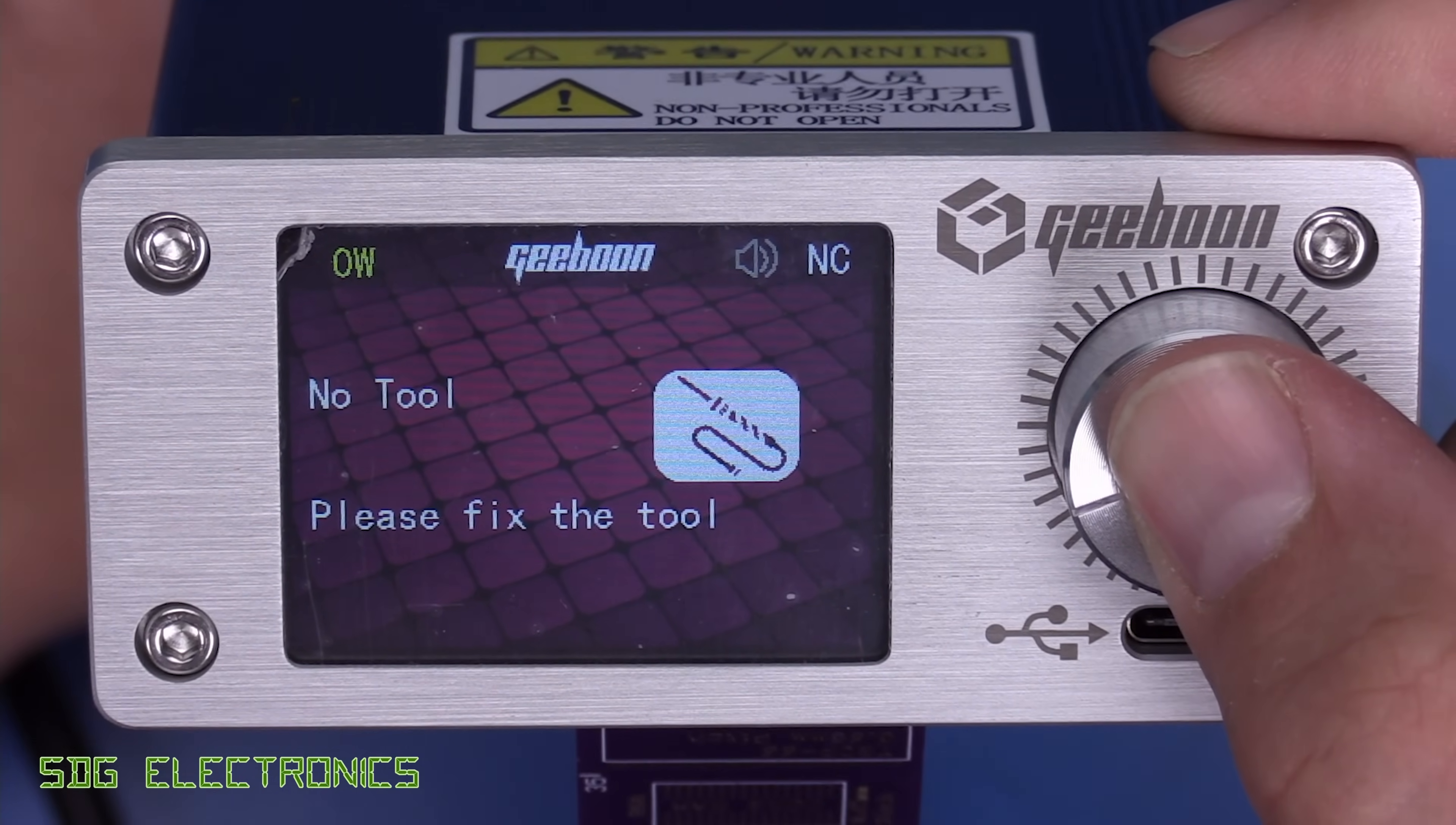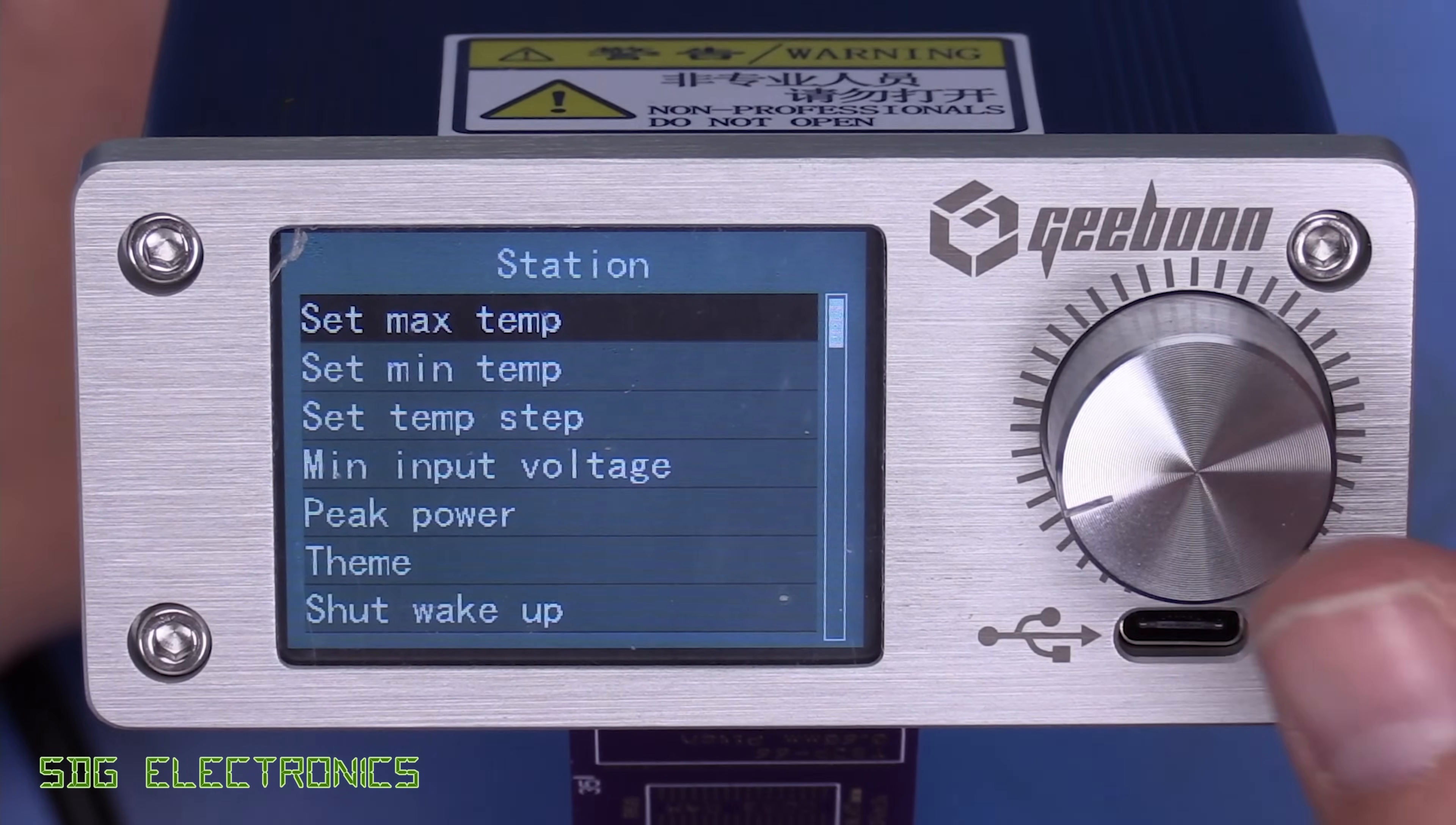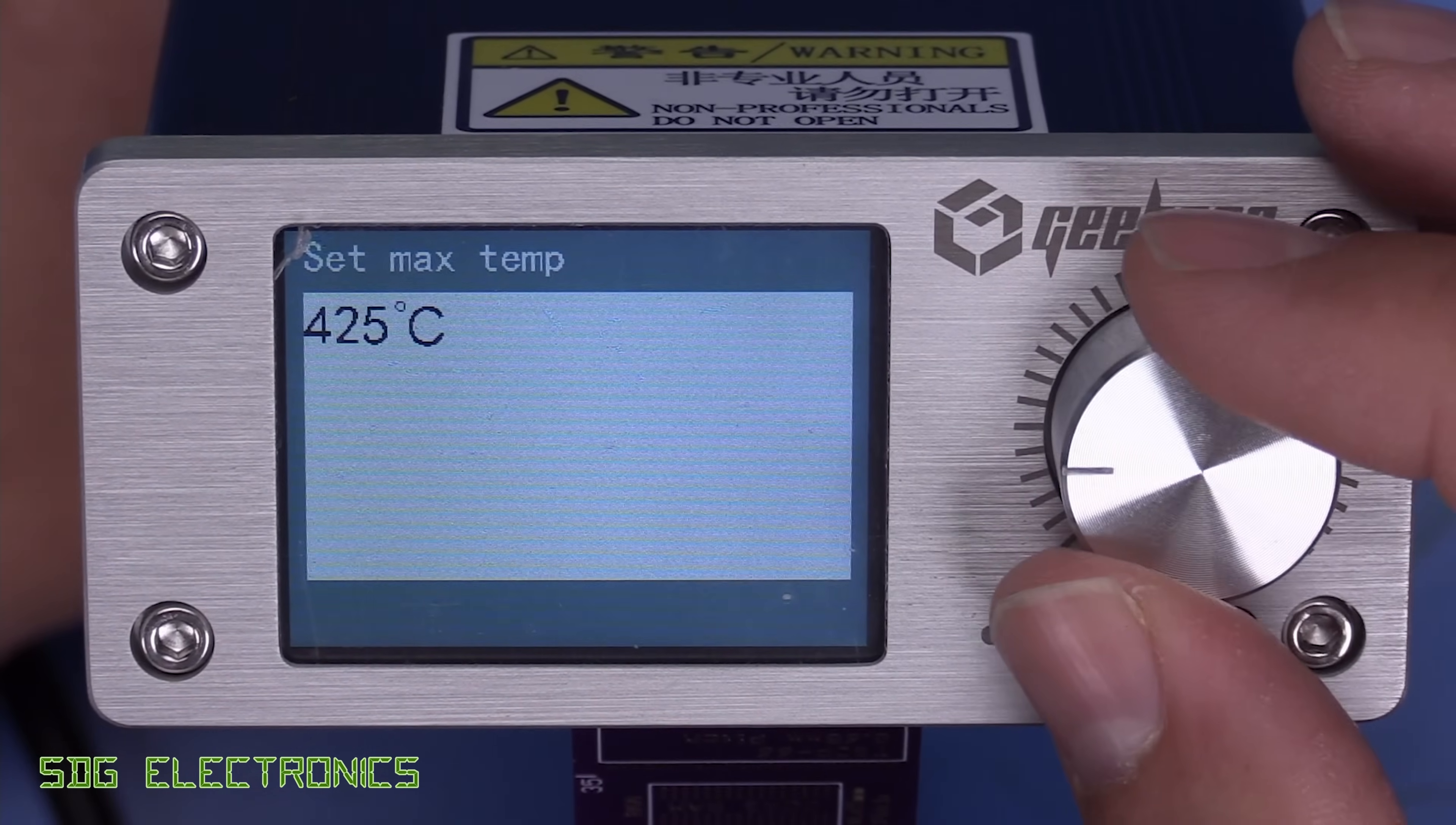And we've got four menu items. We'll go to station first of all. And the first two items are just minimum and maximum temperature. So these are limits that you can impose on the GUI so that you can't accidentally turn the temperature outside of the range that you've set here.